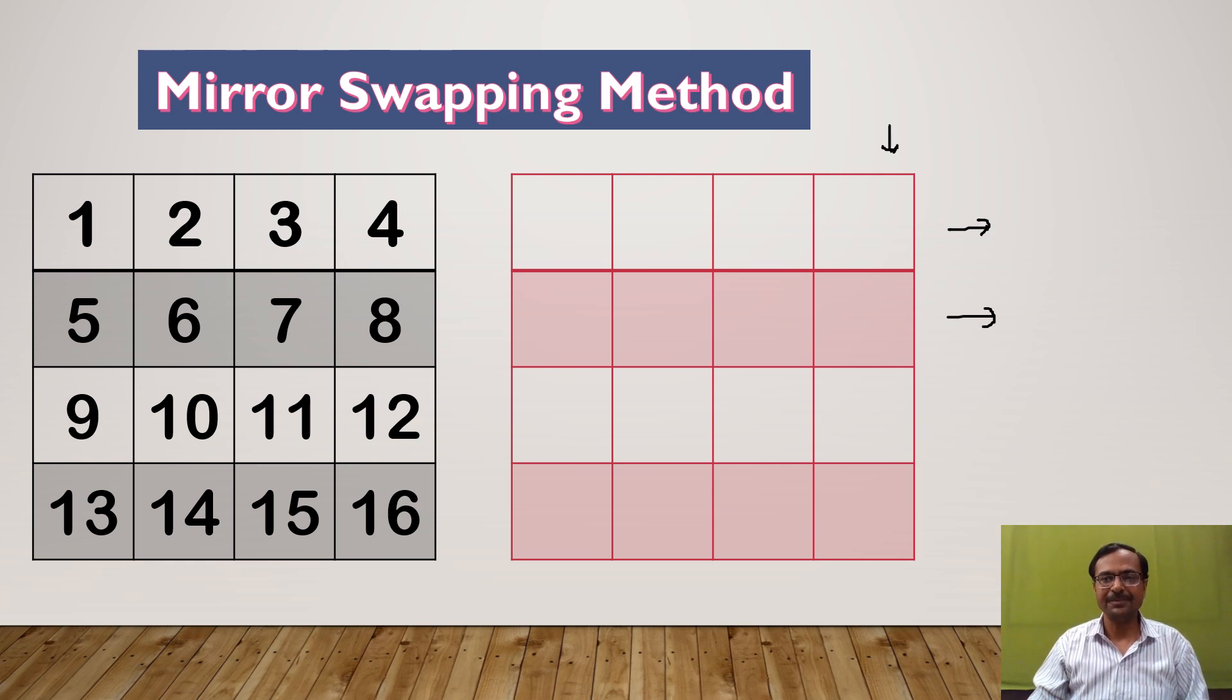I'll tell you what is the simplest magic square and how you can actually make that magic square yourself. This is a four by four magic square. So what will be the sum of the numbers in the row or in the column or along the diagonal?